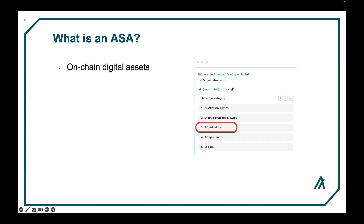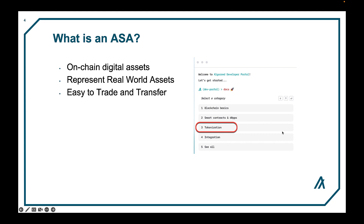ASAs are an on-chain digital asset built right into the Algorand blockchain. ASAs are designed directly on layer 1 to represent real-world assets such as artwork, agriculture, commodities, or real estate. It's never been easier to provide joint ownership of a hotel, for example, as assets can be easily fractionalized. This allows users to easily trade and transfer these assets using the decentralized and secure functions of Algorand globally and efficiently.